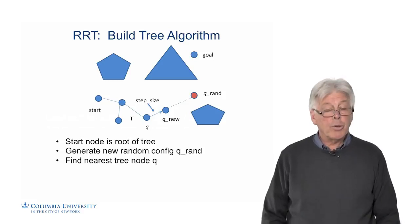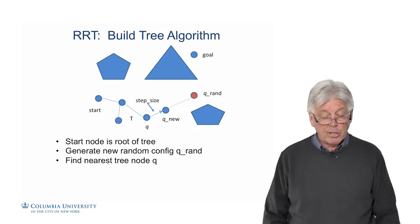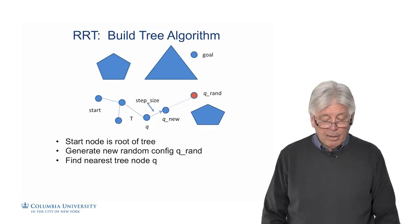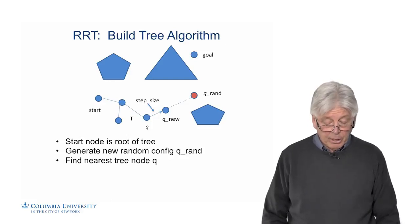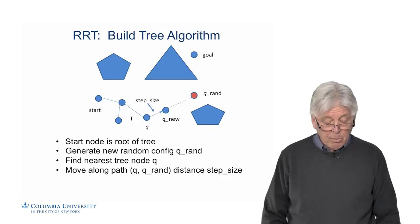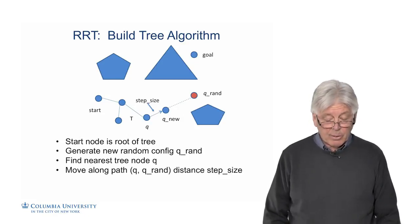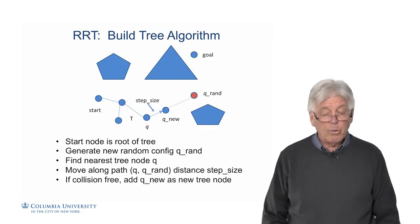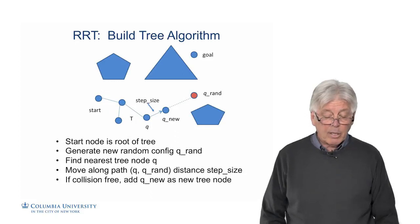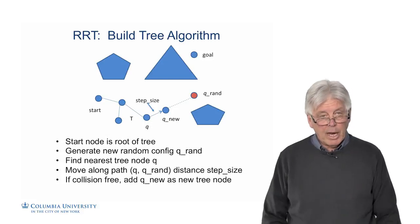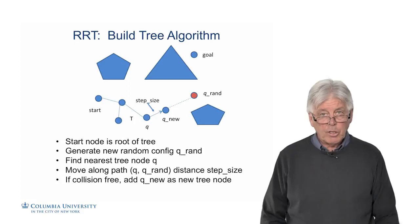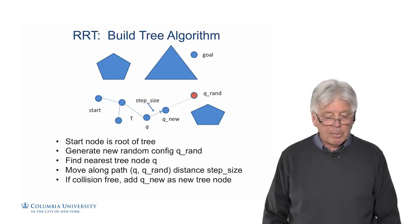We find the nearest tree node. This is where the nearest neighbor computation is important. The distance function between the two nodes is used to find that nearest neighbor. Once we find that Q is the nearest tree node, we move along the path Q-Q-RAN, that straight line, a distance step size, which will create a new node Q-NU. We'd like to go all the way to Q-RAN, but that's too far for the local planner. So we go a small distance and check. We find configurations which are somewhat close to each other, but the direction is forced by Q-RAN. It could be an arbitrary direction.